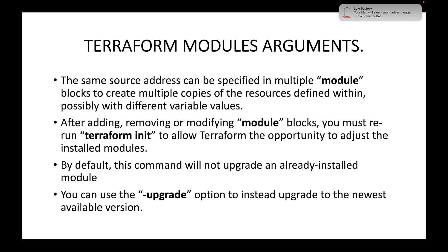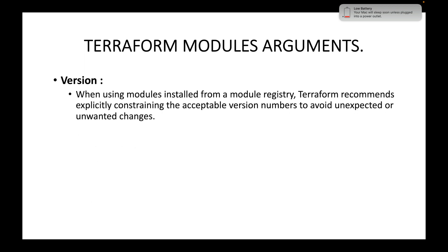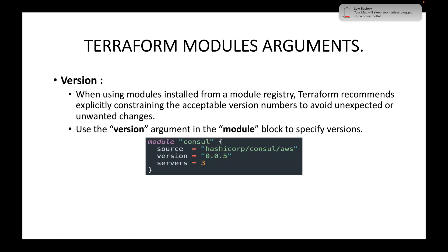Next we have the version argument. When using modules installed from a Terraform registry — such as the public registry — Terraform recommends explicitly constraining the acceptable version numbers to avoid unexpected or unwanted changes. If you are specifying the remote URL of a published registry, it is recommended to specify the version of the module you want to use. Use the version argument in the module block to specify the version.